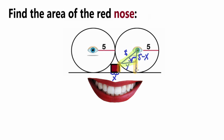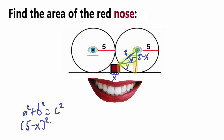For our right triangle, the Pythagorean theorem is a squared plus b squared equals c squared, where c is the hypotenuse — the side opposite the right angle. Our c is 5, and a and b are (5 minus x) and y, so the equation is: (5 minus x) squared plus y squared equals 5 squared, which is 25.